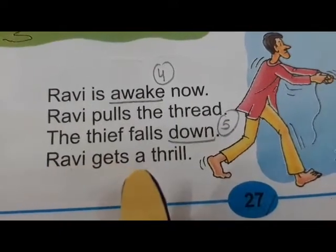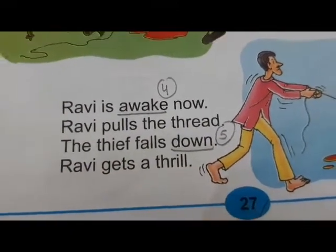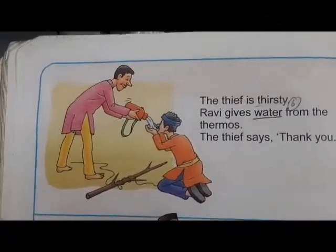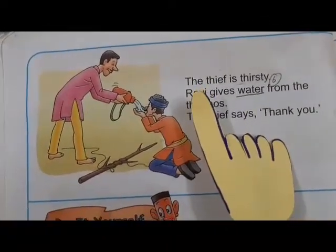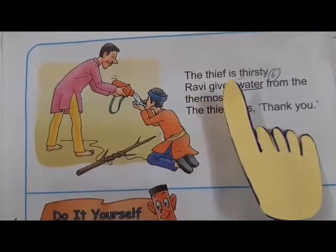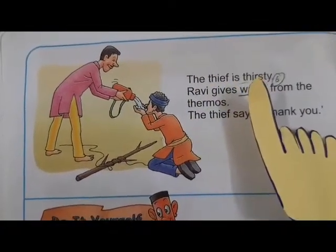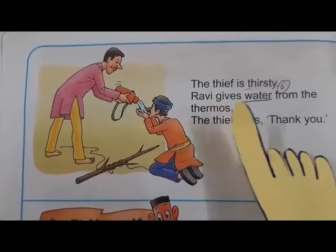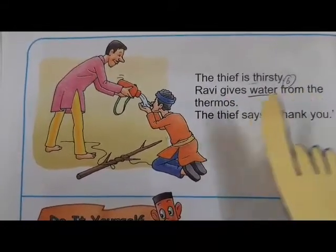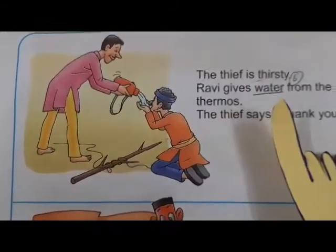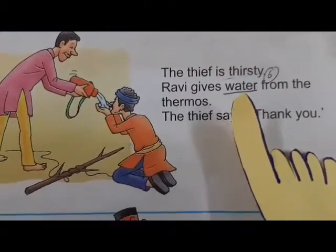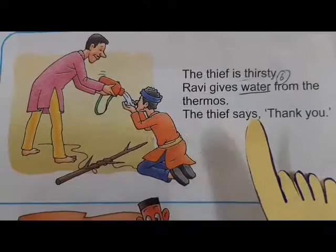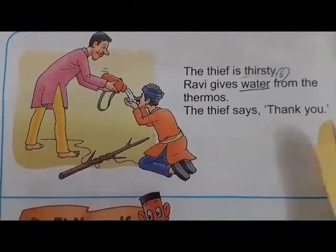Ravi gets a thrill. Now turn the page, children. Ravi gives water from the thermos — underline the word 'water', write down number six. The thief says, 'Thank you.'